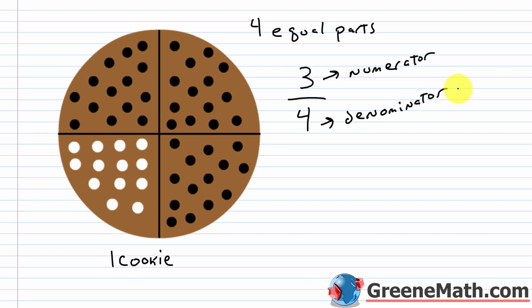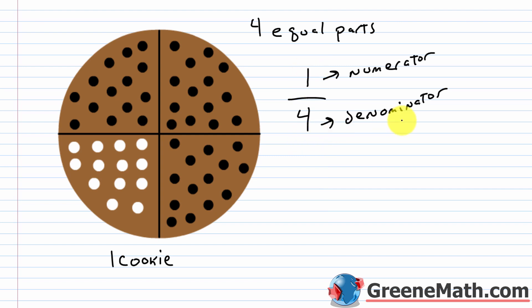What if I asked how much of the cookie has macadamia nuts? That would be one-fourth — we have one piece out of a total of four equal parts. So the numerator changes to one since we're now discussing macadamia nuts, but the denominator stays four because I still have four equal parts in this cookie. So now we're talking about the fraction one-fourth.